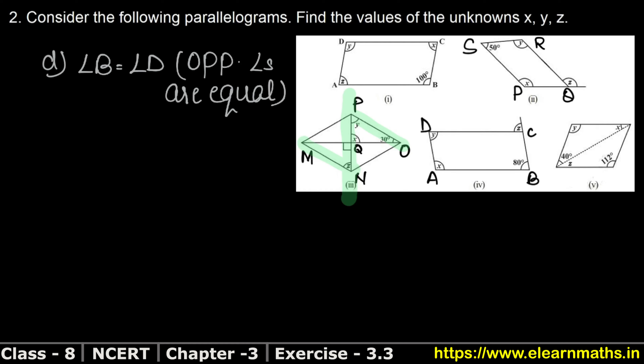So angle B is 80 degrees and angle D is y, so y equals 80 degrees. Now angle A and D are adjacent angles, and adjacent angles are supplementary. So we can say angle A plus angle D equals 180 degrees.